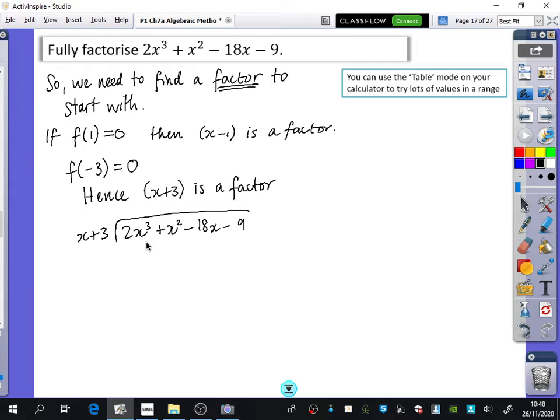I'll show you on the other calculators after, OK? So you're going to do 2x cubed divided by x, which is going to be 2x squared. You multiply. So you get your 2x cubed plus your 6x squared. And you subtract to get minus 5x squared and bring down the minus 18x.